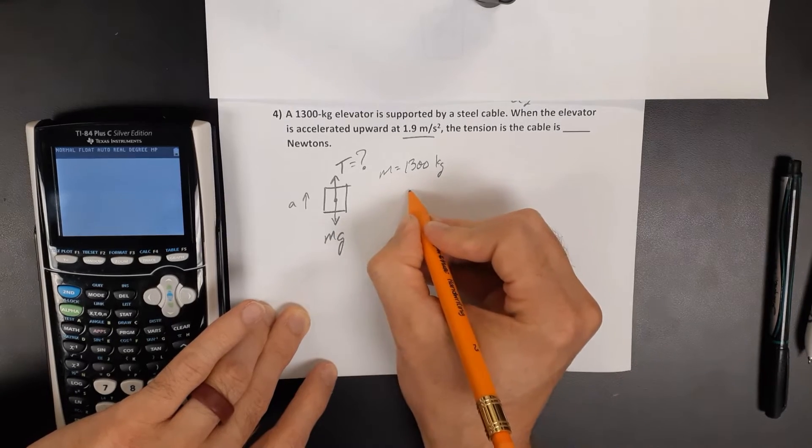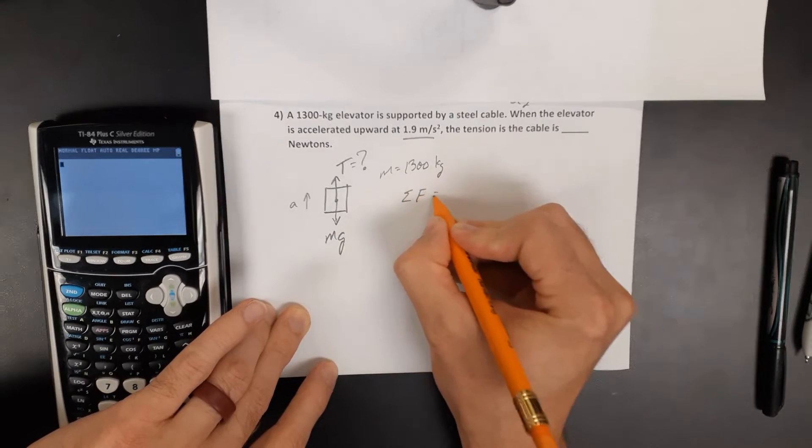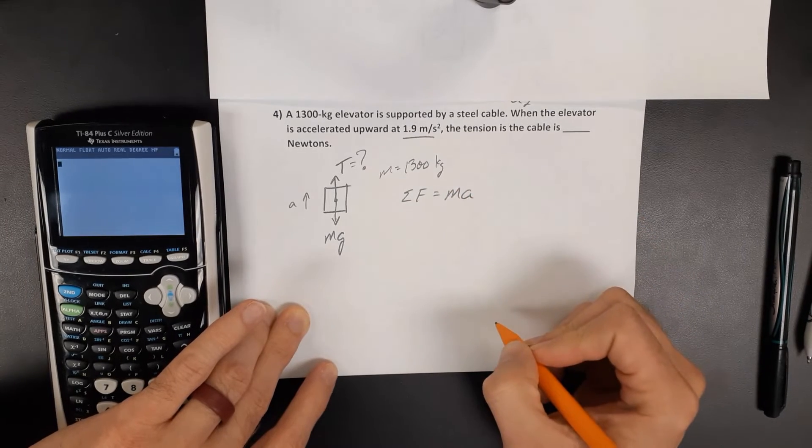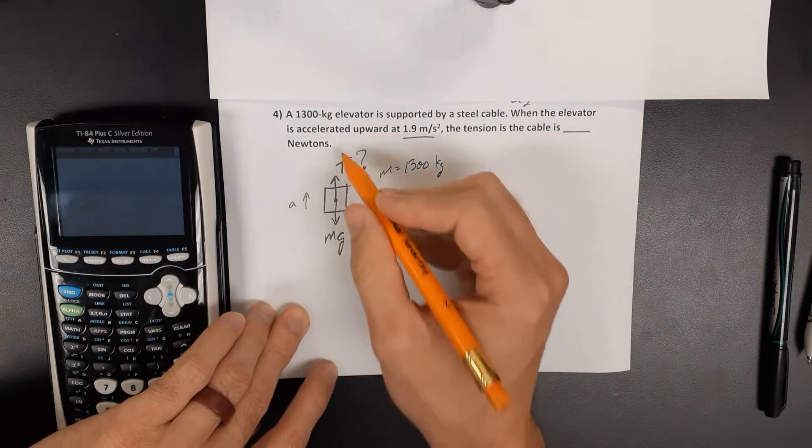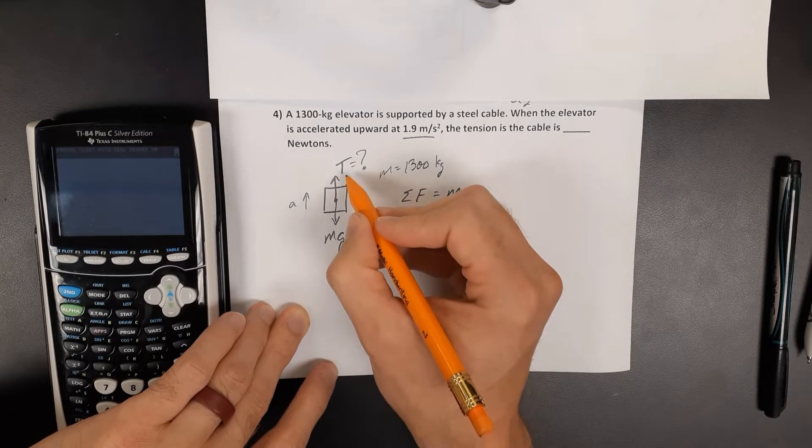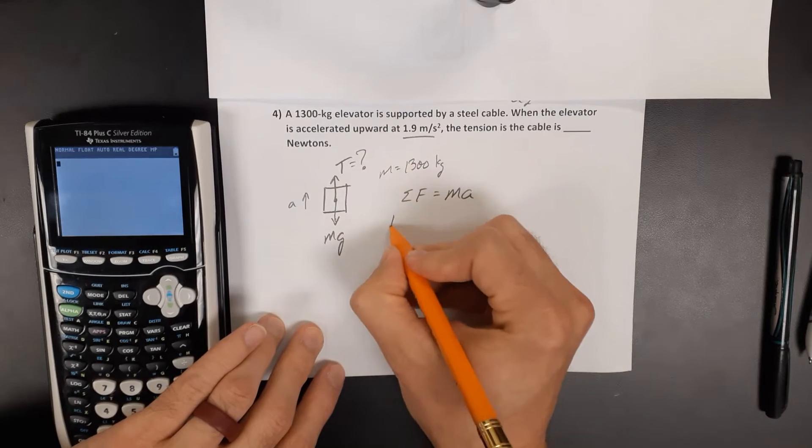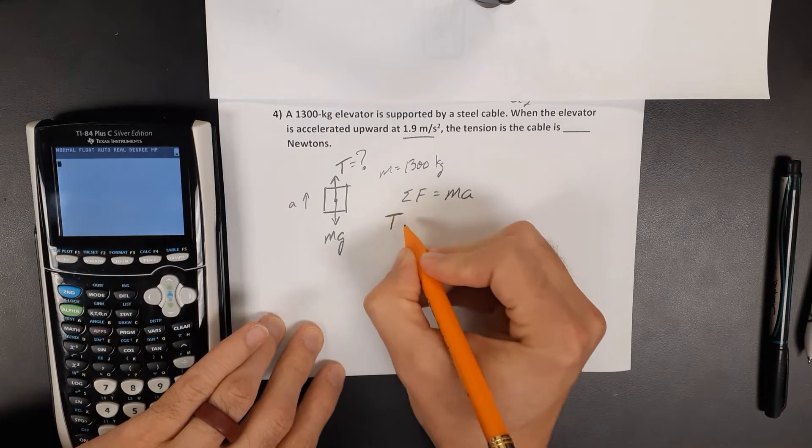In Newton's second law, we know that the net force equals an object's mass times its acceleration. By drawing this free body diagram, we're able to say the forces affecting this elevator are the tension, we'll call that positive going upward,